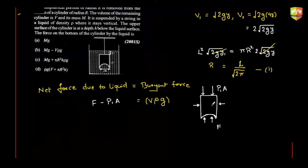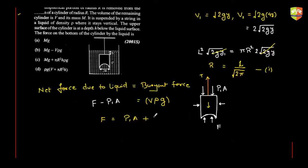You might be wondering about the tension from the string and the mg force. But I am not writing the force balance equation here — I am writing the liquid force equation only. The net force due to the liquid in the upward direction is the buoyant force Vρg. This Vρg can be split into two components: the force from the top and the force from the bottom. So f = p1·A + Vρg.